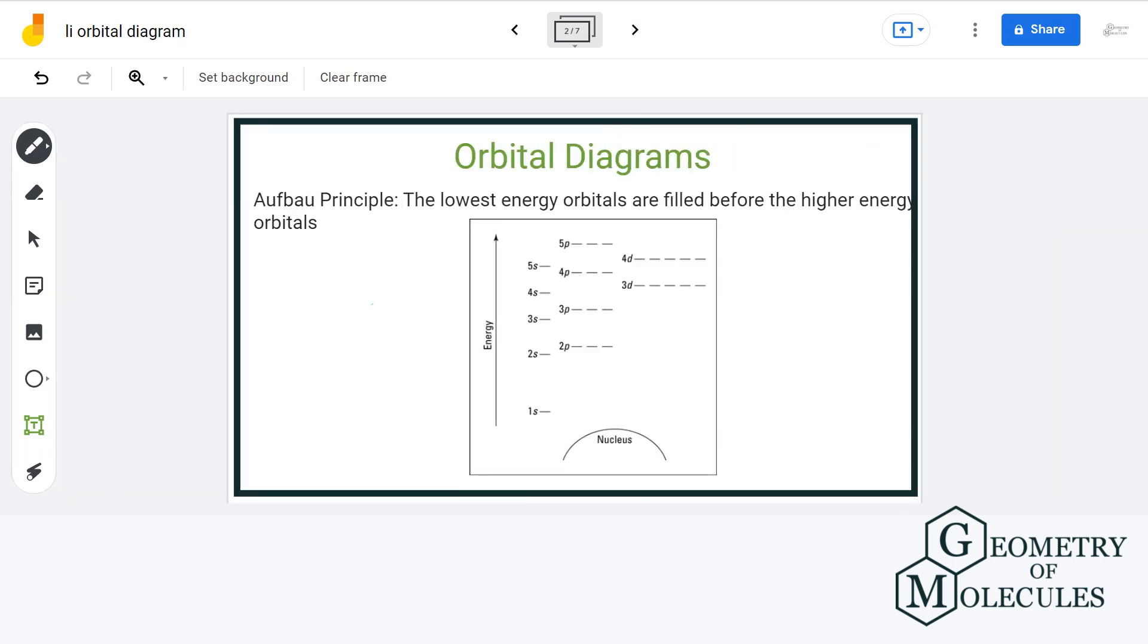Let us see what they state. The first rule is Aufbau's principle that arranges orbitals in terms of their energy levels. Down here we have 1s sublevel that has one orbital, then comes 2s sublevel, and so on. The electrons will go in 1s orbital first and then move on to the orbitals having higher energy.